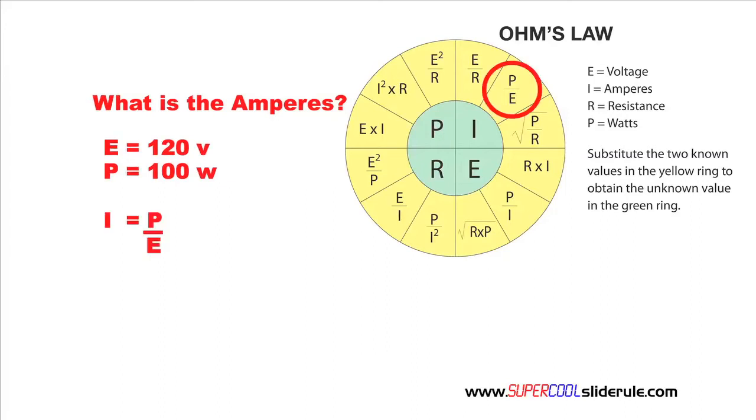We substitute our known values in like this. We simply are going to divide 100 by 120. Our answer is 0.833 amps.